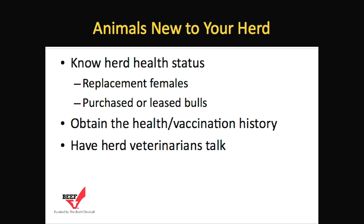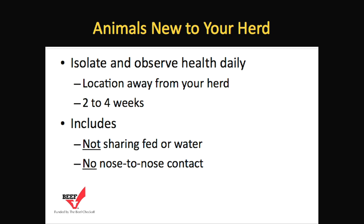Producers should work with their herd health veterinarian to develop a plan involving the family, employees, the veterinarian, and other specialists as needed. When introducing new animals to the herd, you should: number one, know the herd status of the herd supplying the replacements or bulls; number two, obtain the health vaccination history of new animals; and number three, in some cases have your veterinarian speak with their veterinarian regarding the health at the farm of origin. New animals should be isolated for two to four weeks, with no shared feed or water resources and no nose-to-nose contact.